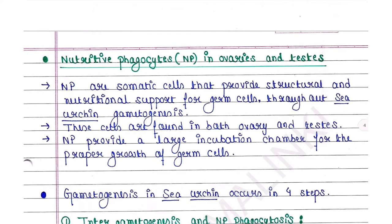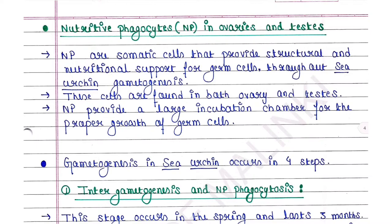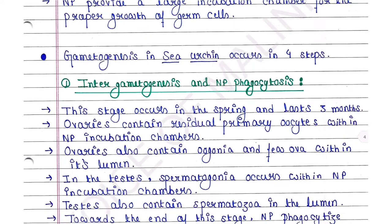Nutritive phagocytes in ovaries and testes — nutritive phagocytes, or NP, are somatic cells that provide structural and nutritional support for germ cells throughout C. arching gametogenesis. These cells are found in both ovary and testes. NP provide a large incubation chamber for the proper growth of germ cells.